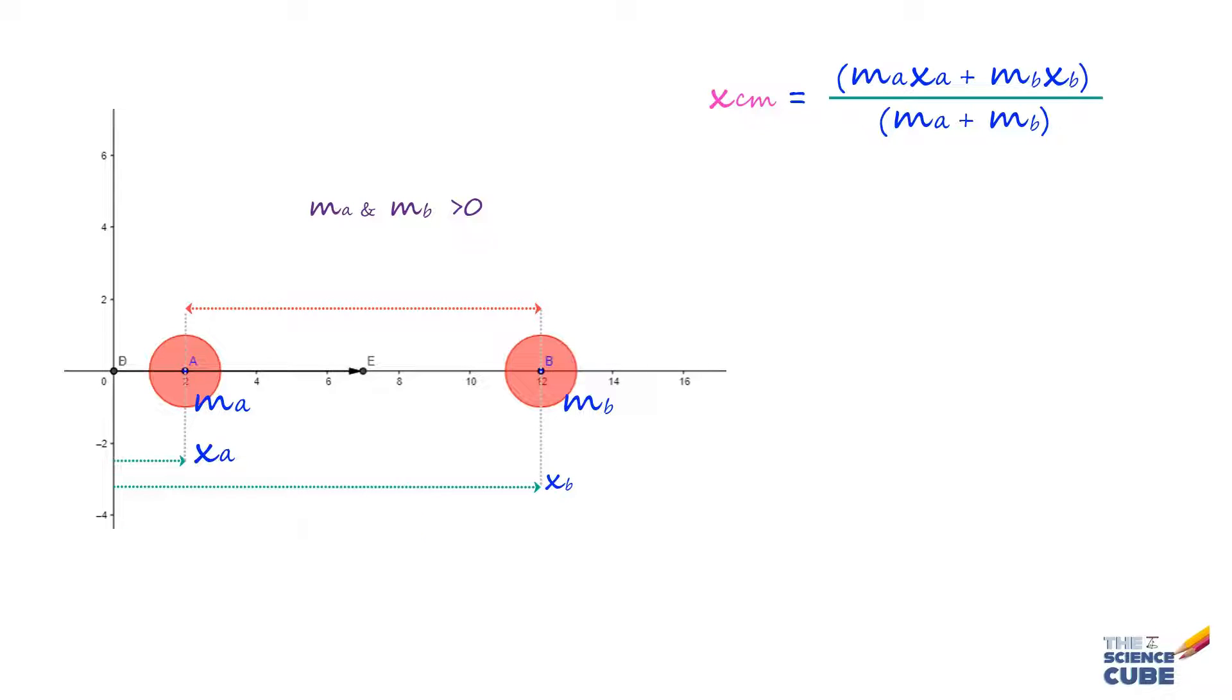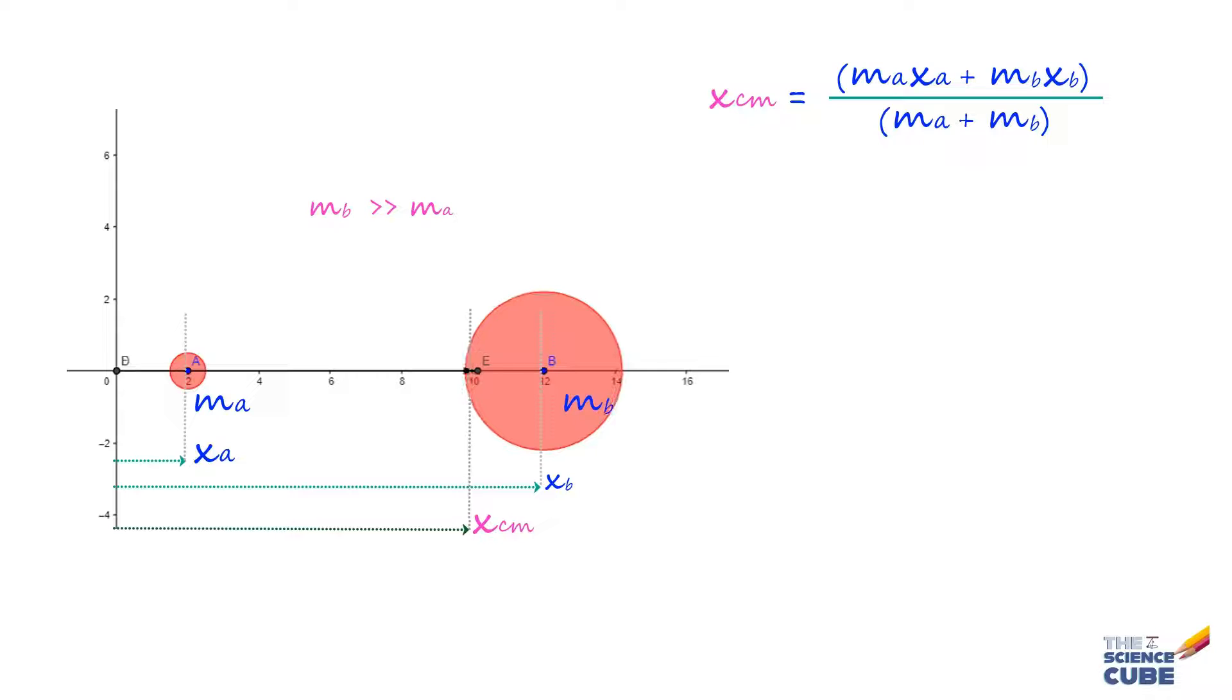Okay, now what if we make mb significantly larger than ma? Well, we should expect the center of mass to move quite a bit towards mass b and likewise, if you made ma much larger than mb, the center of mass should move towards ma.